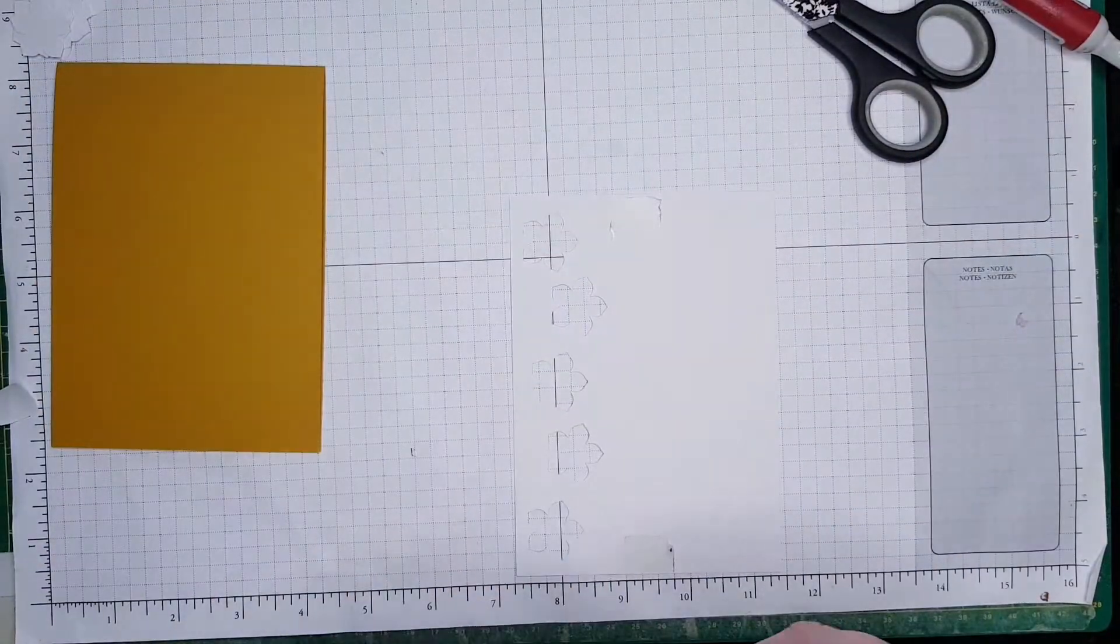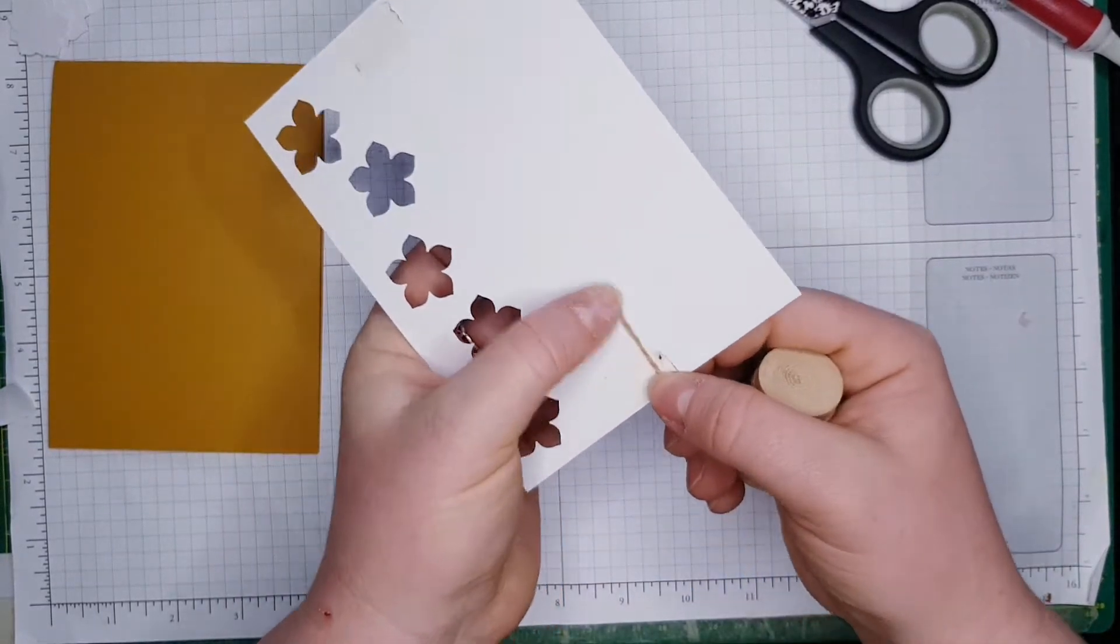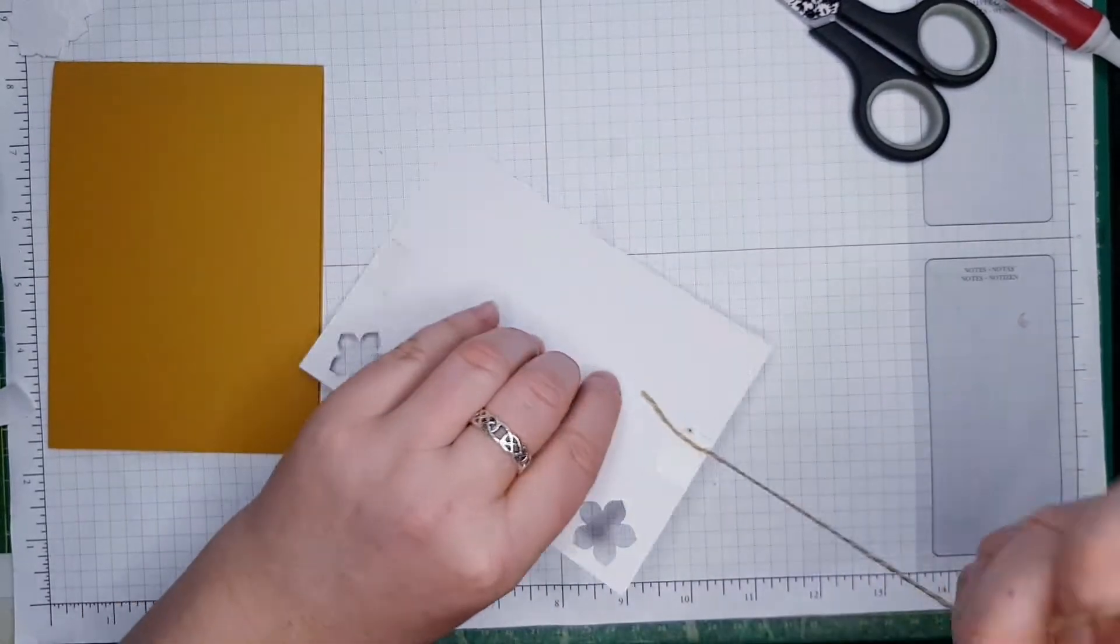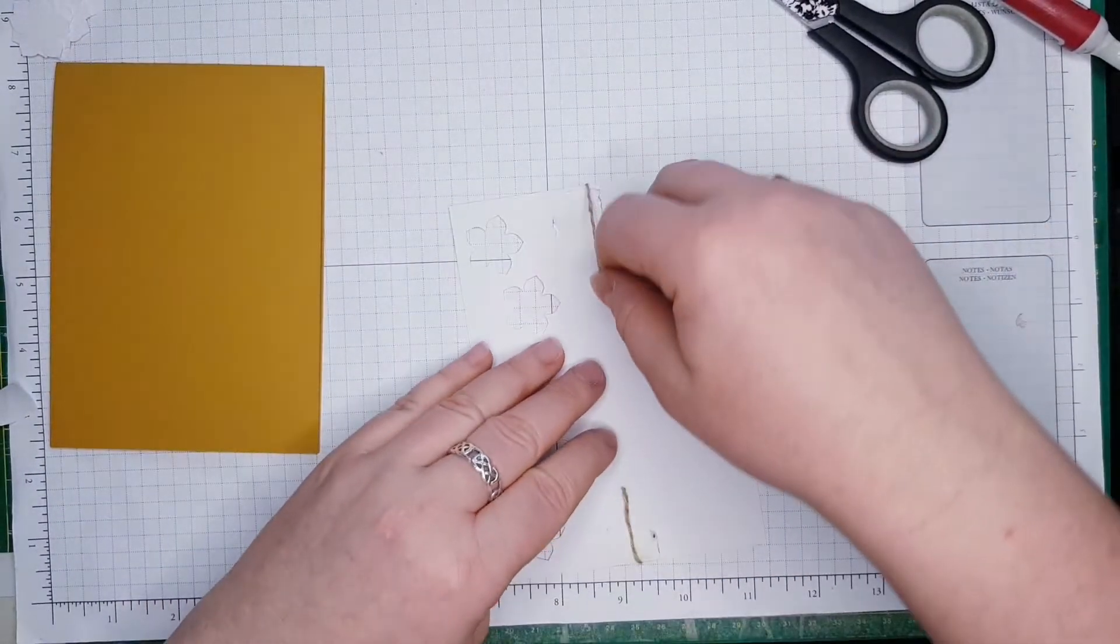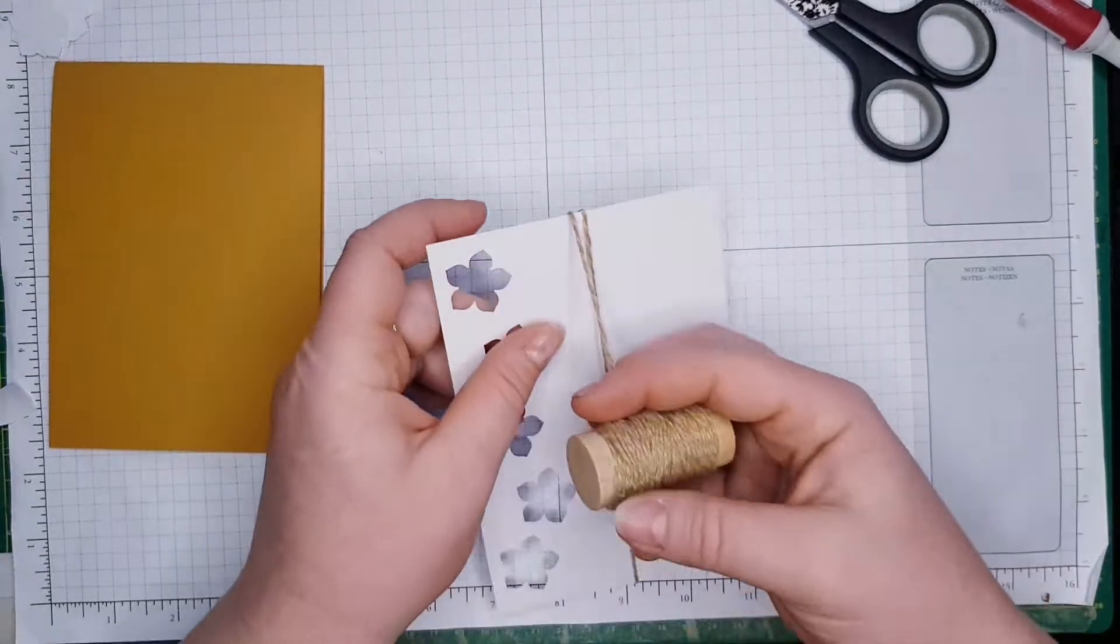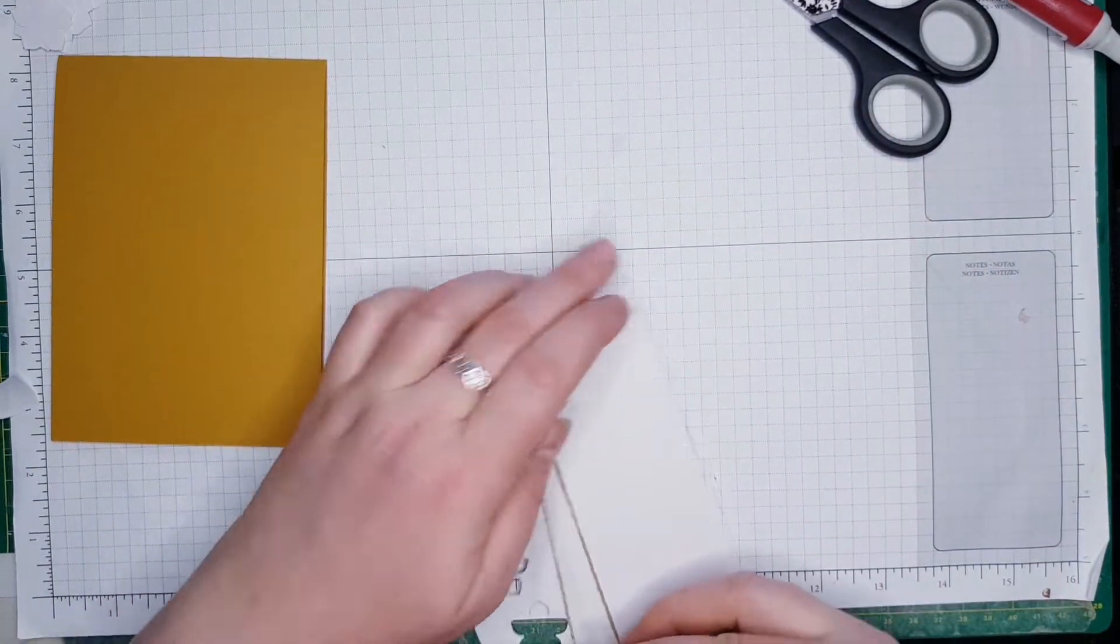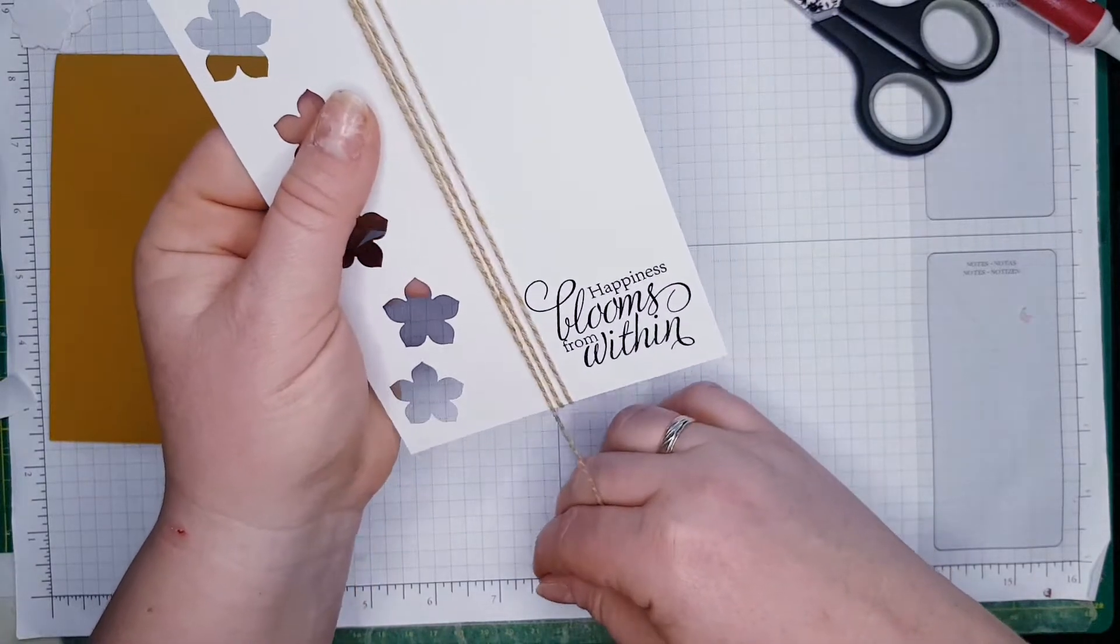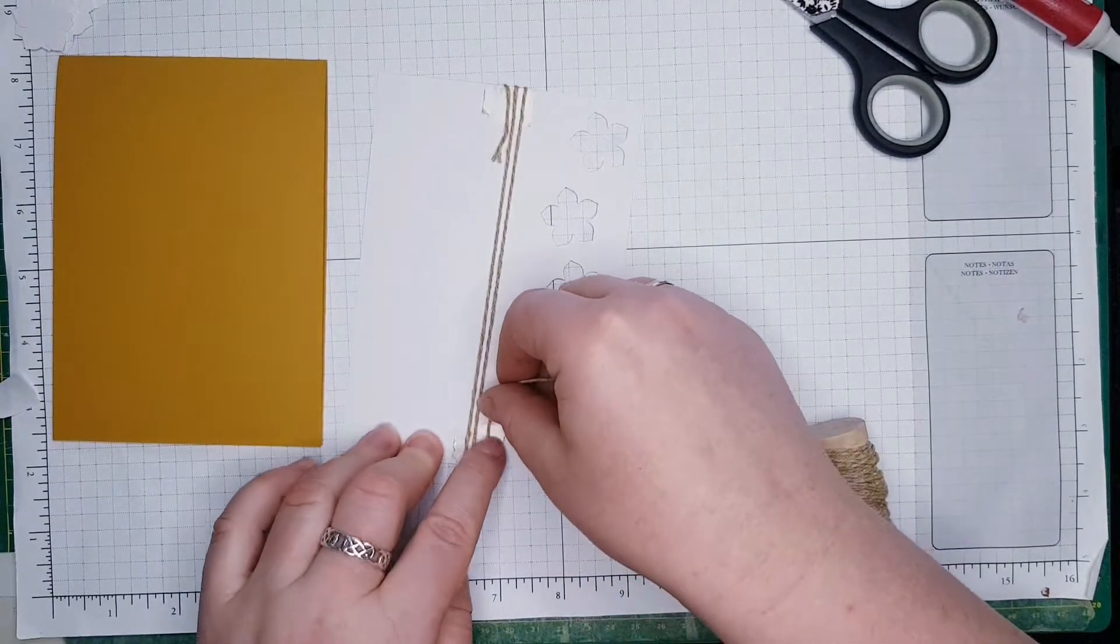Now we're going to take the twine and wrap it around. This is a very sticky double-sided tape, so I'm going to wrap it around and leave a gap. Don't wrap it around too tight because you need some movement. I would like to have a bow. I'm going to have only three panels, I like three.